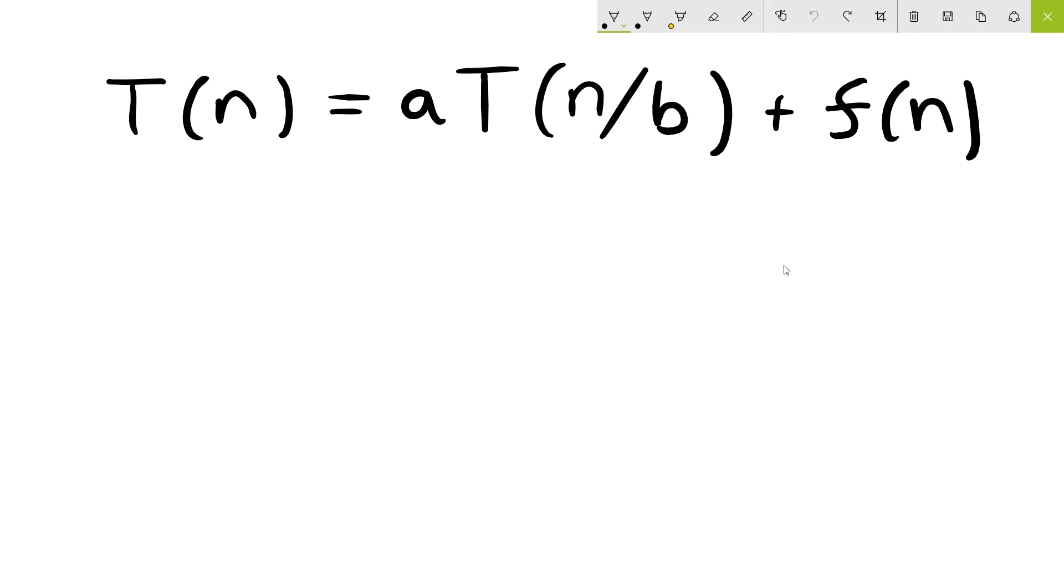All three of these rules will make comparisons of the positive function f of n to the function n to the log base b of a. And then some of these rules will include this additional factor of epsilon, where epsilon is a constant that is greater than zero.